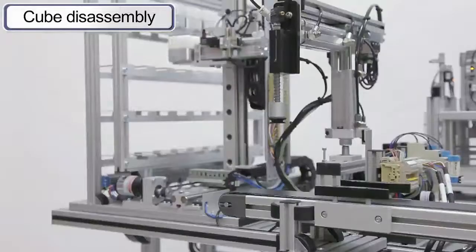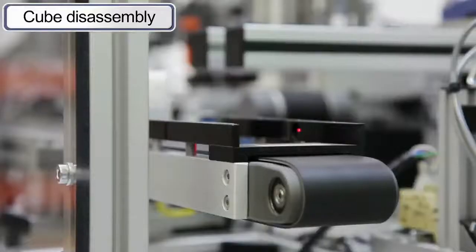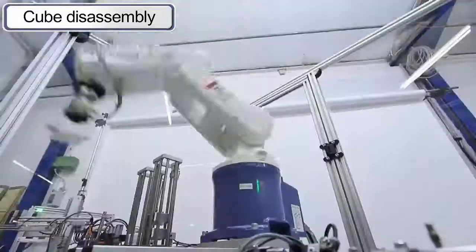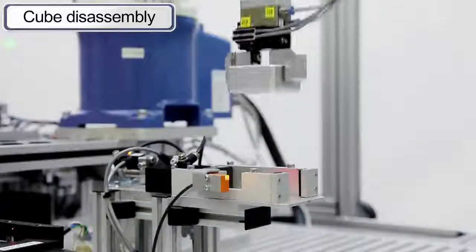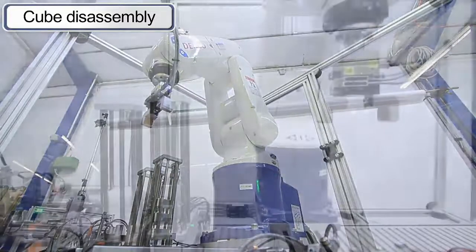After manufacturing and storing the CUBEs, the second sub-process begins, removal from storage and CUBE disassembly. This task is carried out by a modern industrial articulated robot with six motion axes and a pneumatic parallel gripper.